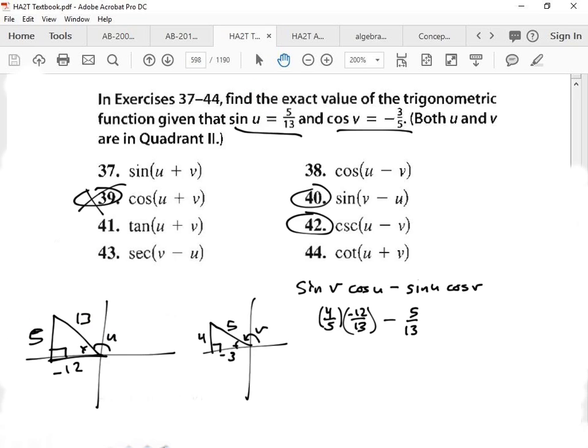And we're given cosine of v, which is negative 3 over 5. We have to multiply those. So I get, what is it, negative 48 over 65 minus, actually, that's going to be a positive. We got 15 over 65. Denominators are the same. All right. So we get, what is that, 33 over 65. Okay, so that's our answer for number 40.